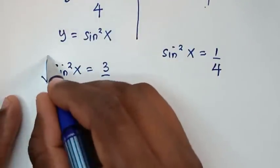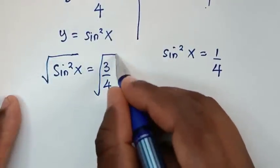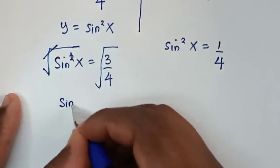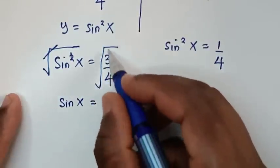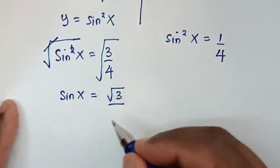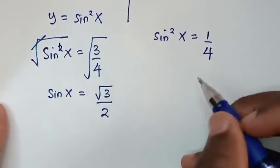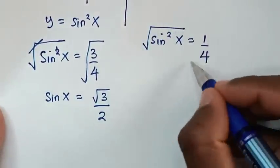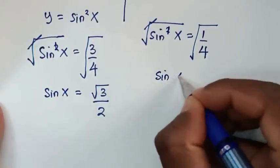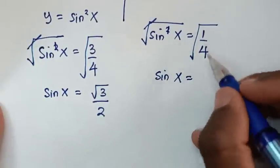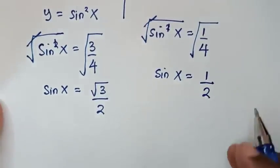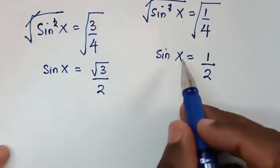Then, recalling that we let y equal sin squared x, we compare these equations: sin squared x equals 3 over 4, and sin squared x equals 1 over 4. Applying square roots to both equations: sin x equals square root of 3 over 2, and sin x equals square root of 1 over square root of 4, which is 1 over 2.